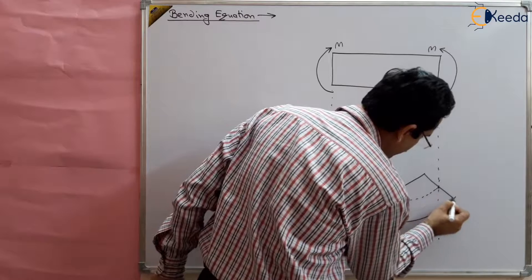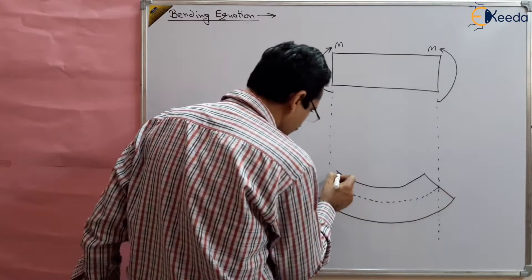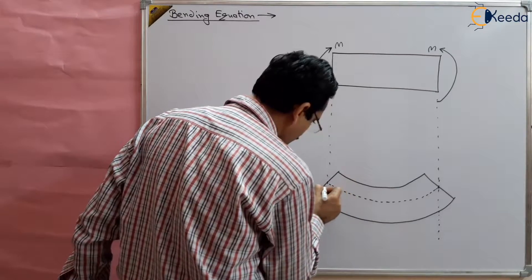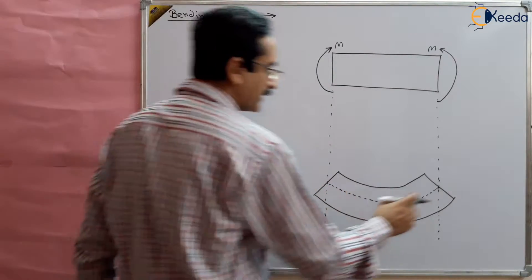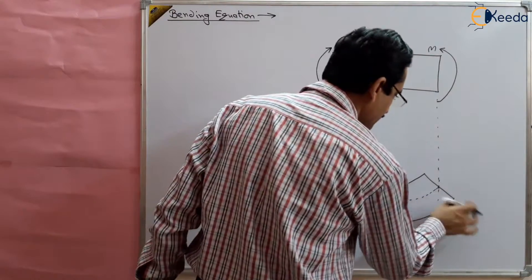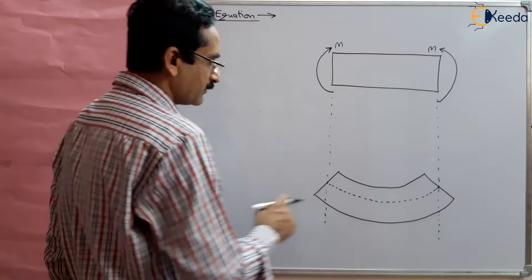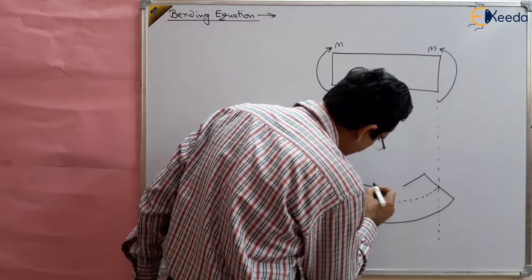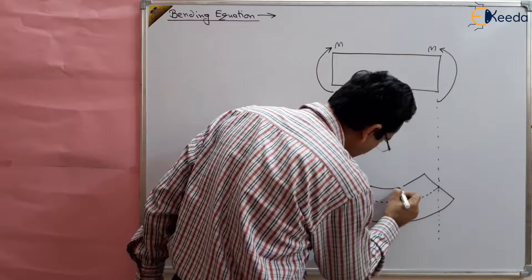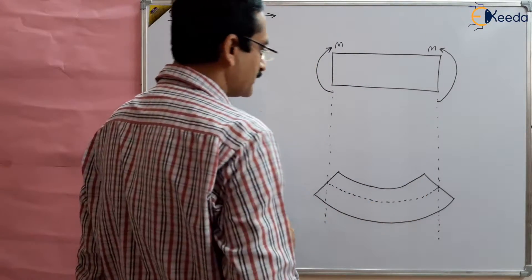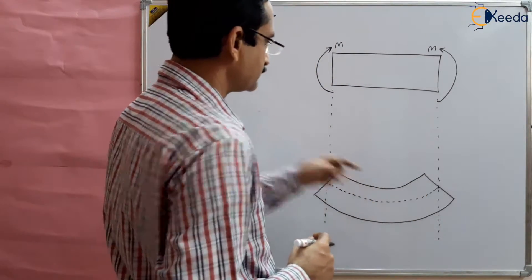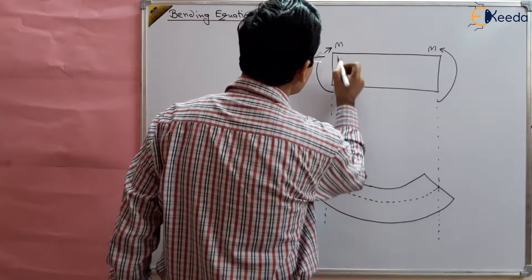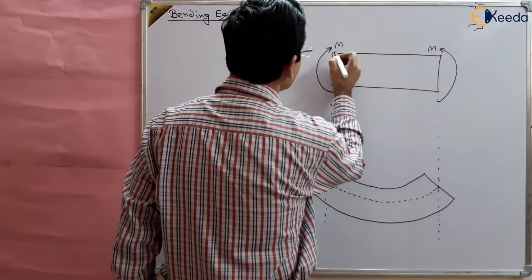So suppose this is the condition after bending — the condition is like this. There is some curvature obtained in this case. N is the neutral layer. This is point A, this is B, and this is the neutral layer N.